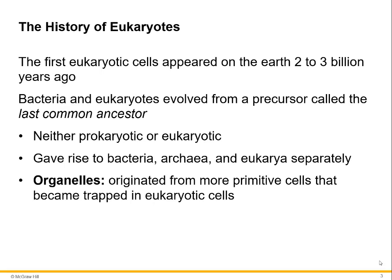The first eukaryotic cells are estimated to have appeared on Earth two to three billion years ago. The bacteria and the eukaryotes evolved from a precursor cell called the last common ancestor, which was neither prokaryotic nor eukaryotic. It gave rise to the bacteria, the archaea, and then the eukaryotes separately. Based on genetic evidence, it seems that the bacteria came first, and then archaea and eukaryotes separated off.